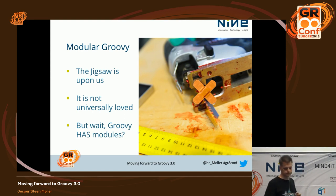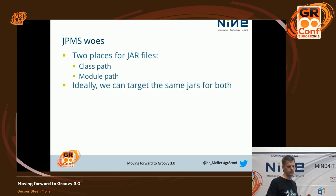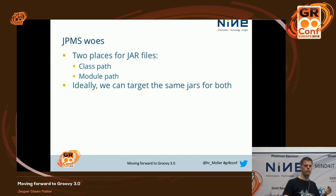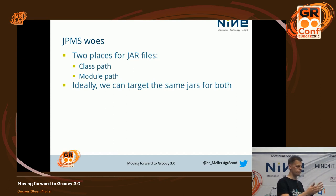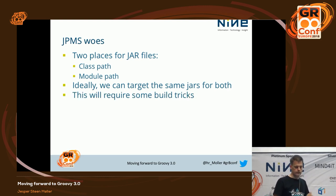There are now two different kinds of jar files. It's not certain that we can use the same kind of file for both places. For that, you need something compiled both for Java 8 and for Java 9, but still have the module information for Java 9. Otherwise, we will have to distribute different jar files for different Java versions, and that's not nice. So that's going to take some build tricks. Some of those build tricks have been implemented in Maven; I'm not sure about Gradle at this point.